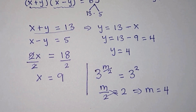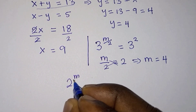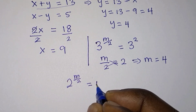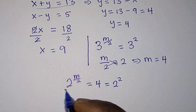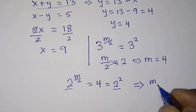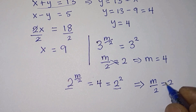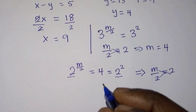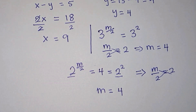Likewise, when y = 4, we have 2^(m/2) = 4 = 2^2. Since the bases are the same, we equate the powers: m/2 = 2, and cross-multiplying gives m = 4. So in either case, m = 4.